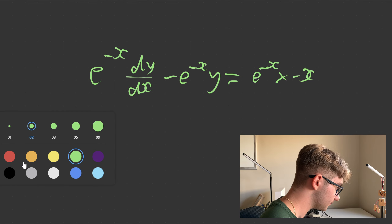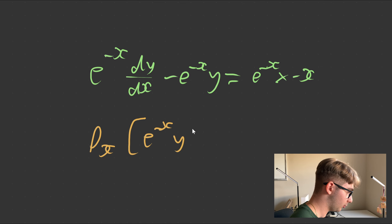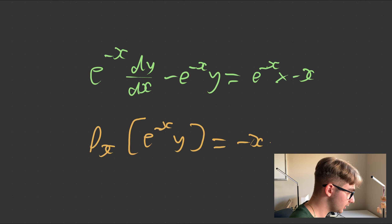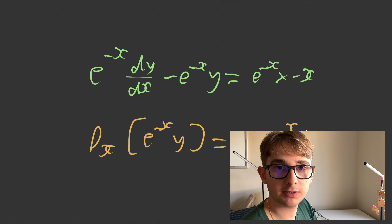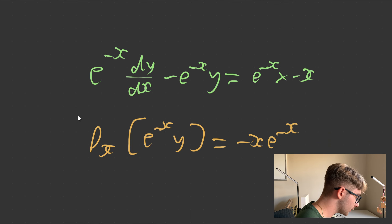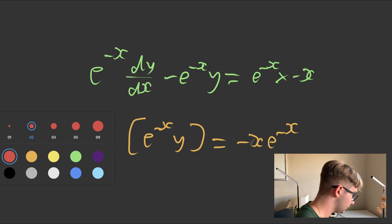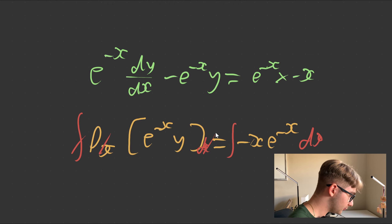We can say that the derivative of e to the minus x times y is equal to negative x times e to the minus x. Now what we want to do is integrate both sides with respect to x to get rid of that d/dx. So we integrate both sides and the dx terms will cancel out.